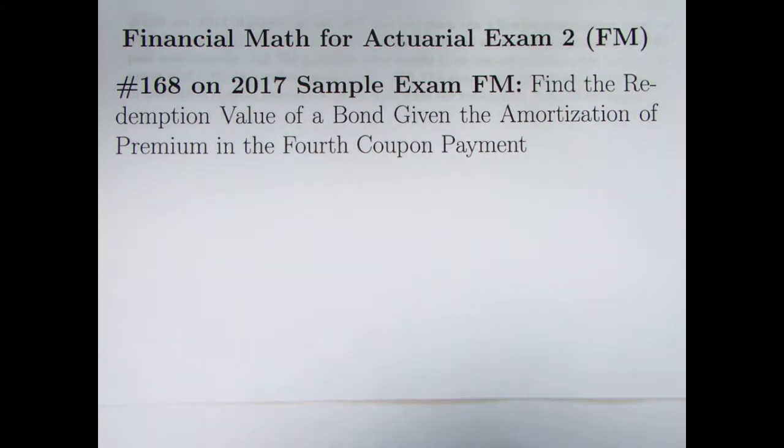We want to keep practicing, and it seems like you can never really quite get enough practice with bond problems. There are a lot of different types of problems that you can encounter. So I was looking for more problems, and I found number 168 in a 2017 sample exam about finding the redemption value for a bond when you're given the amortization of the premium in the fourth coupon payment, as well as some other basic information about the bond.